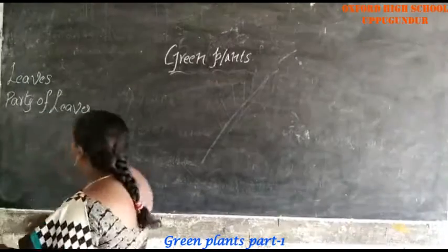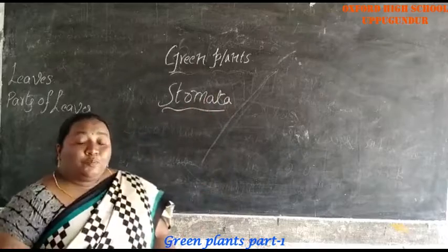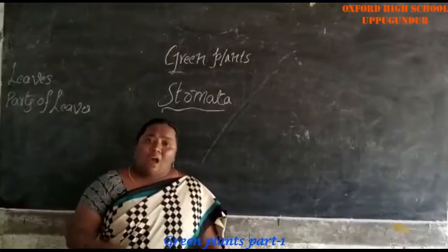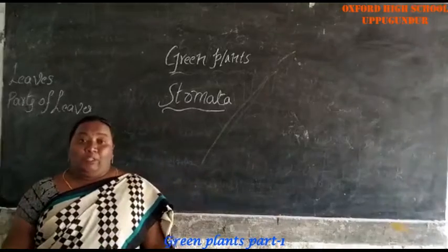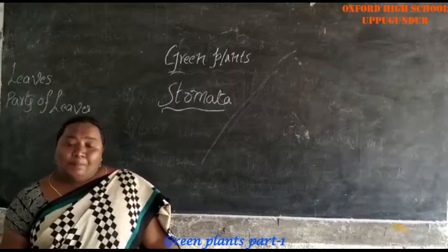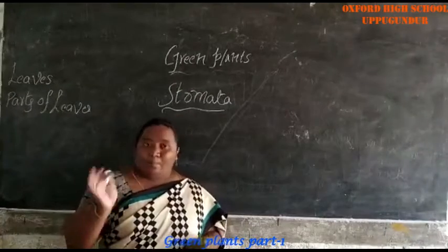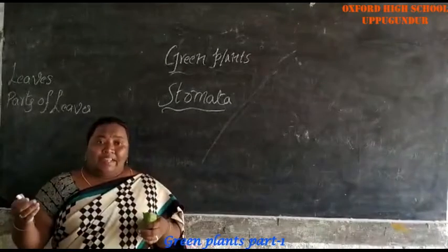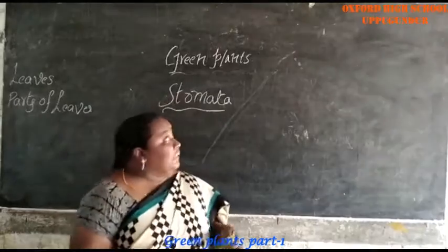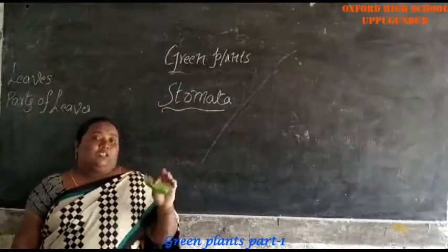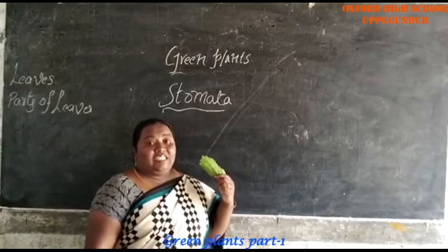Next, stomata. What is meant by stomata? How we will breathe? We will breathe through our lungs. We breathe in oxygen and release carbon dioxide. How the fish will breathe? Fish will breathe through their gills and absorb the air present in water. All living organisms — frog, snake, all the insects — should breathe. They will breathe through their lungs, gills, or some other pores. In the same way, since plants are also living things, they should also breathe. How they will breathe? They will breathe through the tiny pores present on the leaves, which are called stomata.